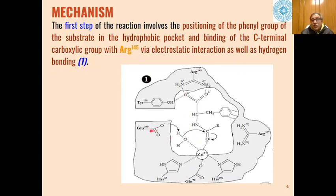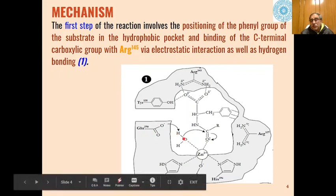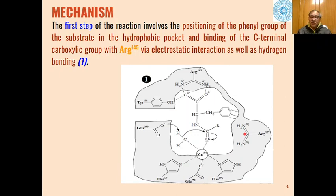Glutamic acid 279 will abstract this proton and this will act as a nucleophile to attack the carbon of the carbonyl of the substrate. An active charge on this oxygen will be neutralized due to the presence of this cofactor Zn2+ ions in the first step. This is the position of the substrate and the enzyme in the first step to form a stable enzyme-substrate complex.